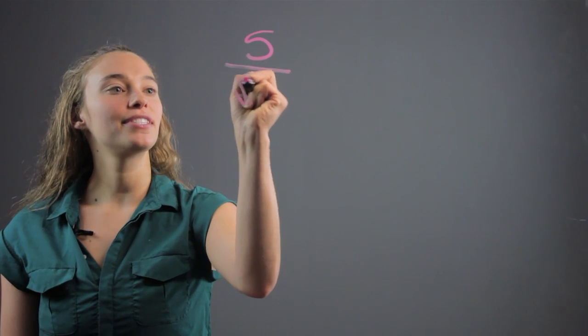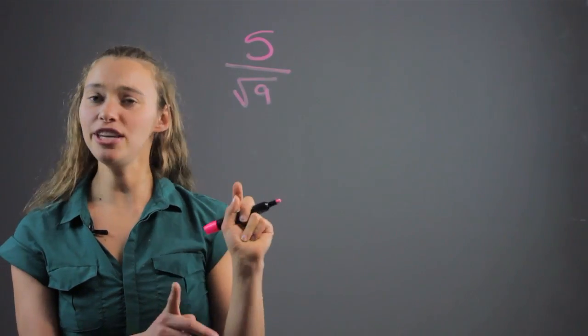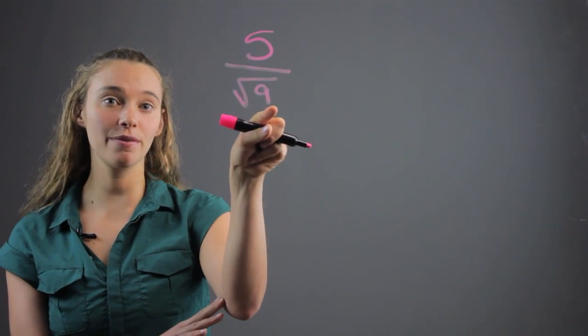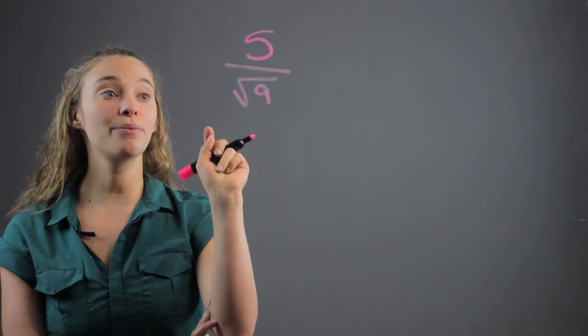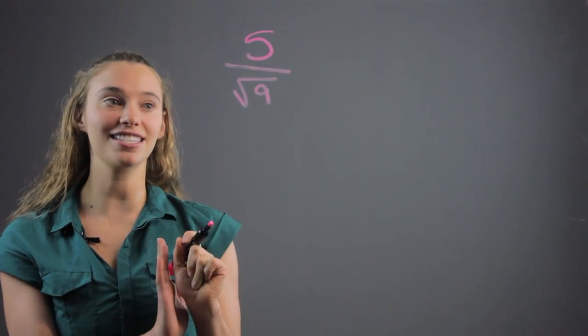If we're given an example such as 5 over the square root of 9, we know that we can never have a square root in the denominator, so we have to rationalize it. We cannot write this radical expression as such.